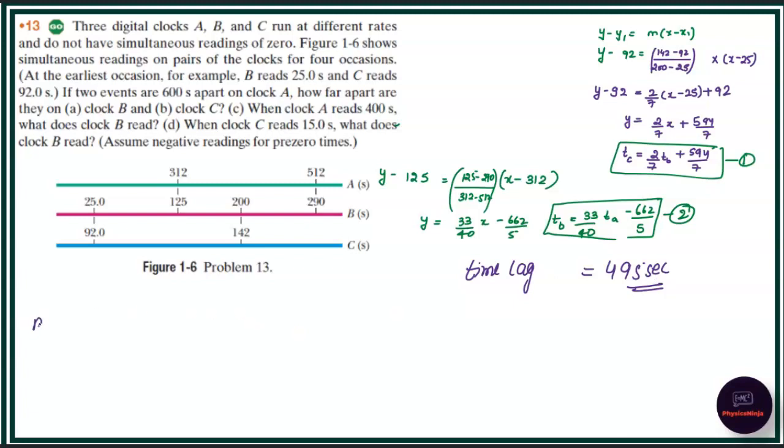And for the second question, as we can see, we have to find the time lag for clock C. So if I'm just doing this process again, TC1 minus TC, if I'm just taking the difference between the two, this will be 2/7 times TB1 minus TB. That means time difference, the time lag. So this will be 2/7 times 495. The answer will come to 141 seconds.